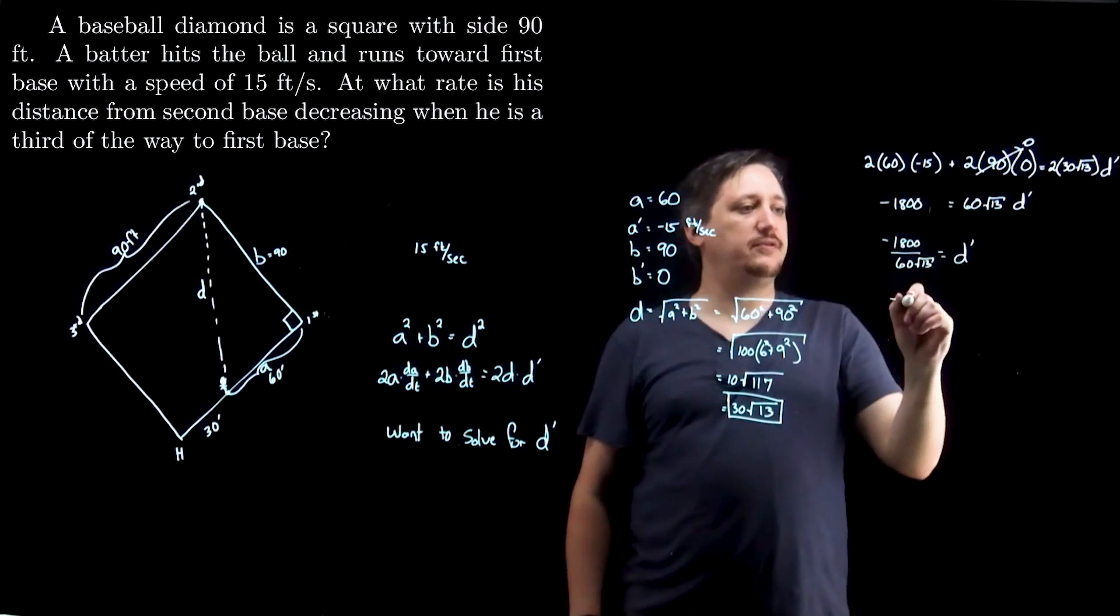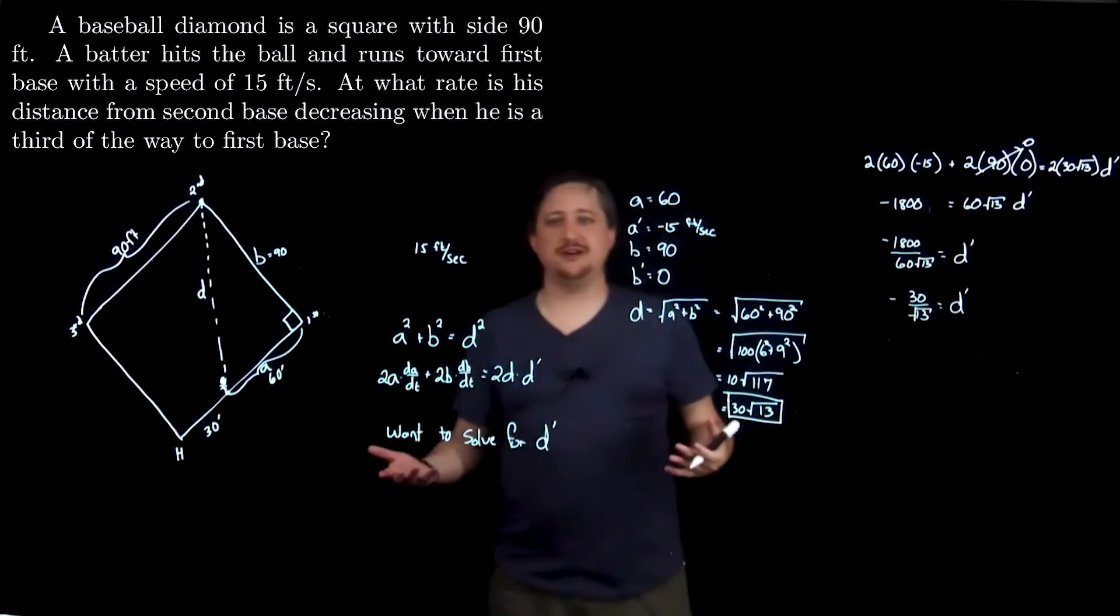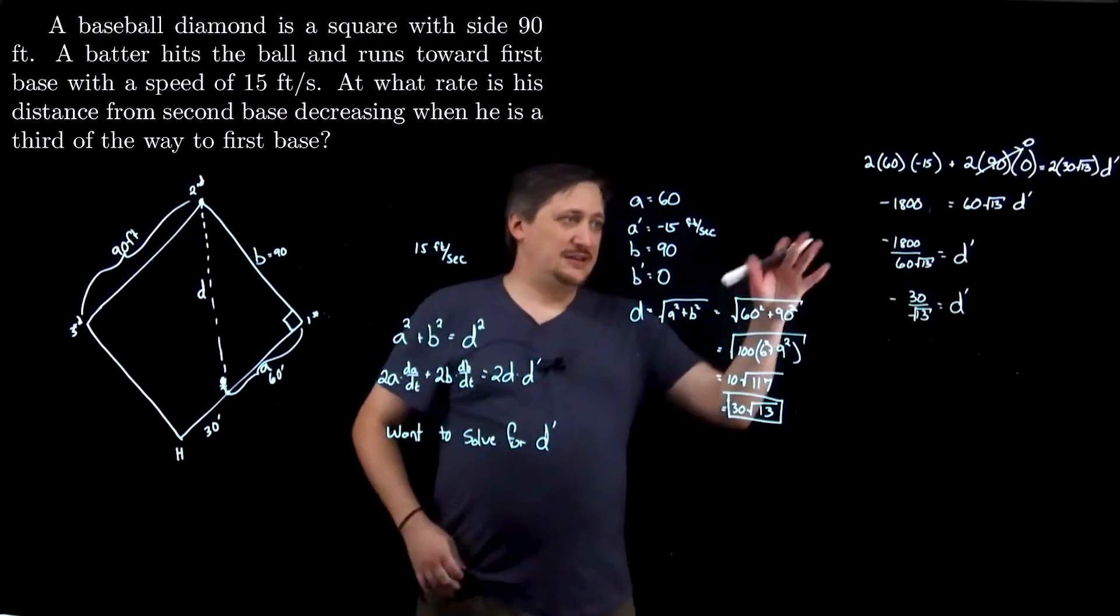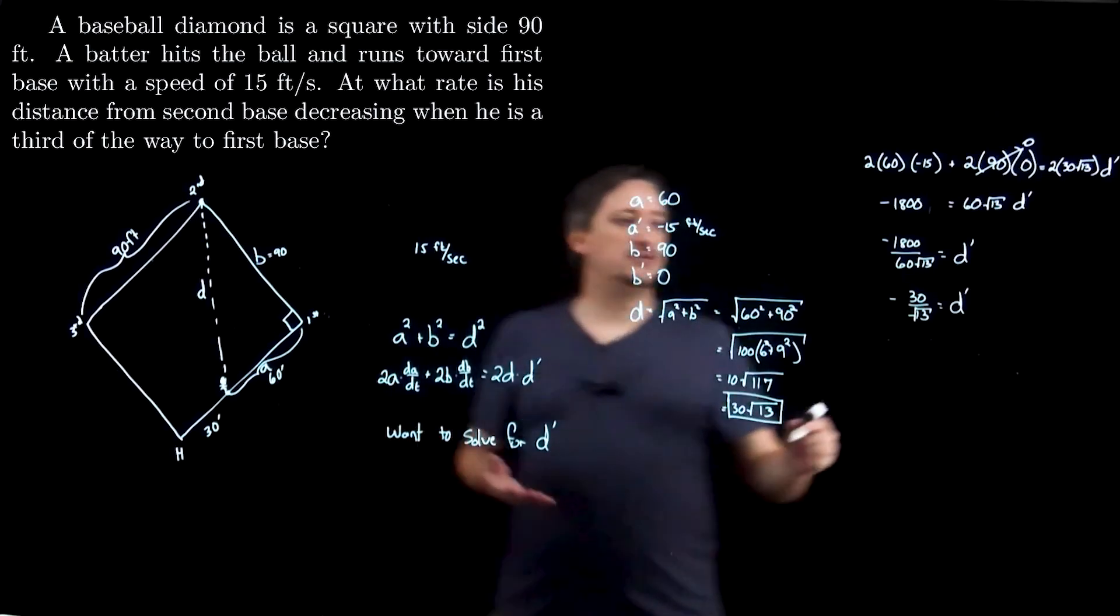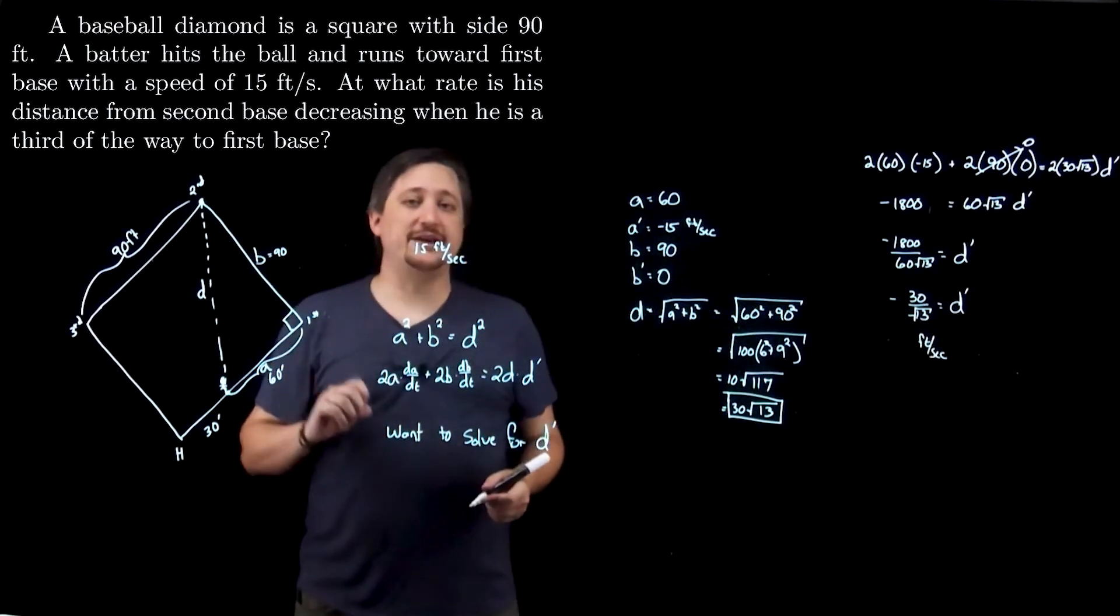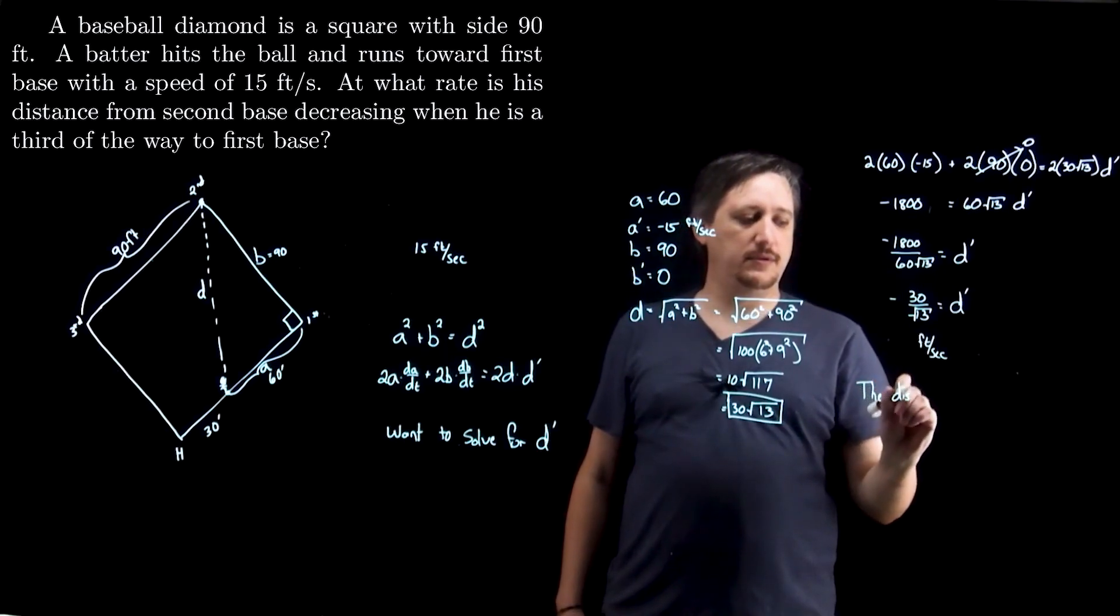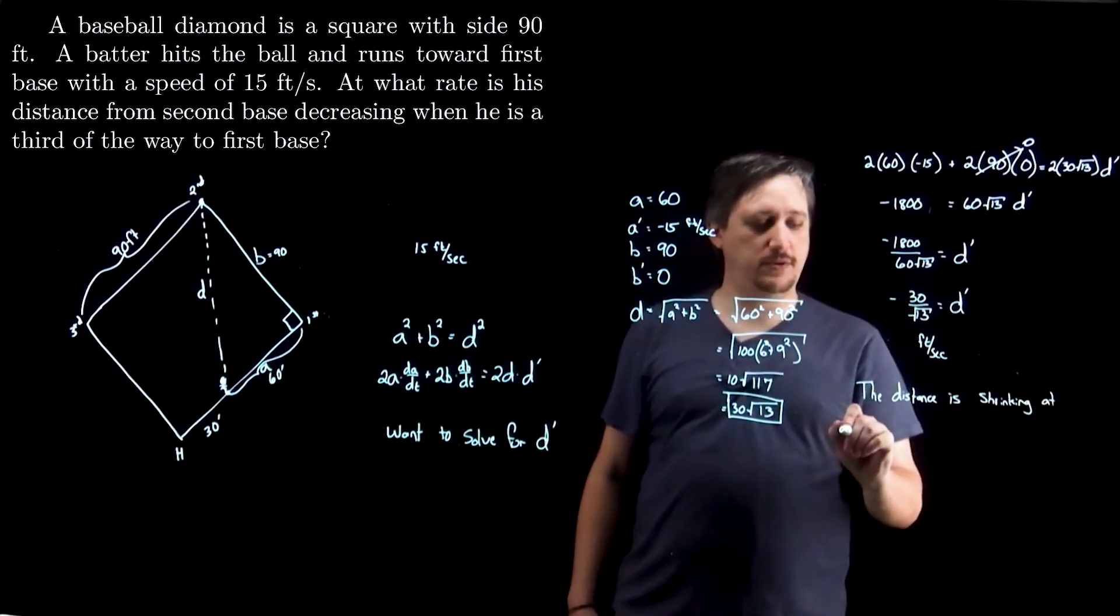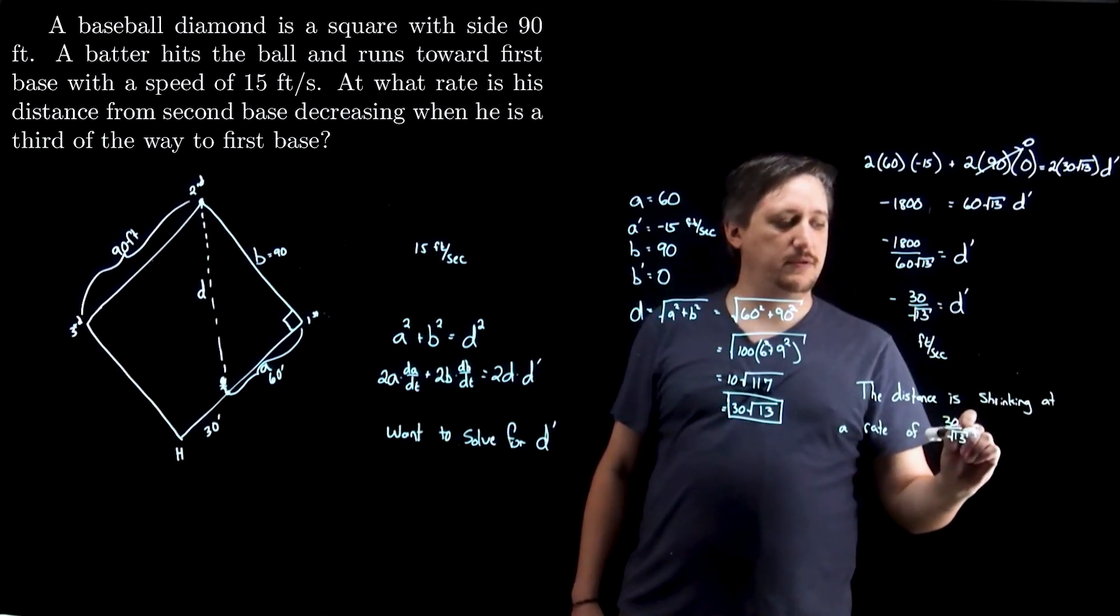And that's going to simplify to -30 over √13. And yeah, I could rationalize the denominator, but there's no point. I would only do that if that actually got me anywhere, and I can't simplify it nicer than that because 13 is prime, so I'm just going to leave it like that. Now, it's important to interpret this correctly. The change in distance is -30/√13, specifically feet per second. And what that's telling me is that this distance is shrinking by that rate. So I would write this as the distance is shrinking at a rate of 30/√13 feet per second.